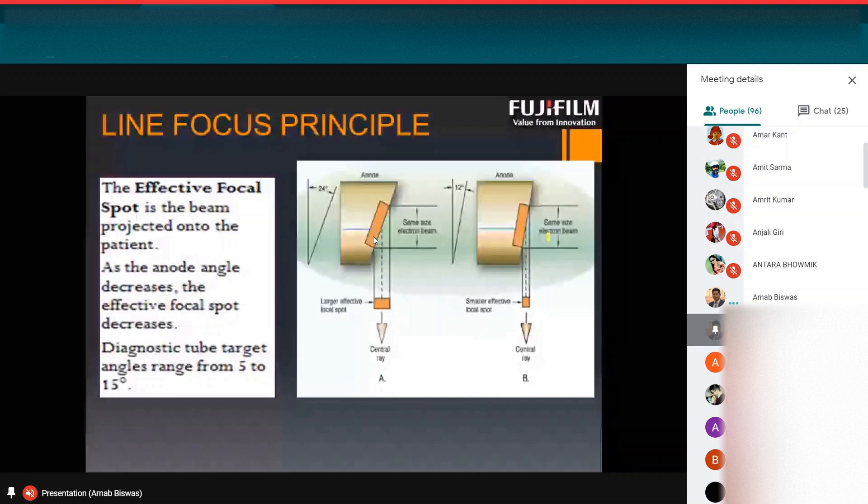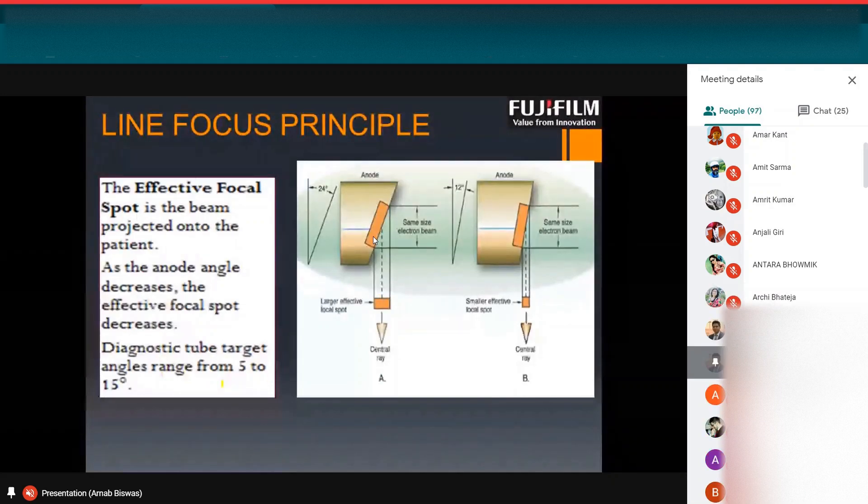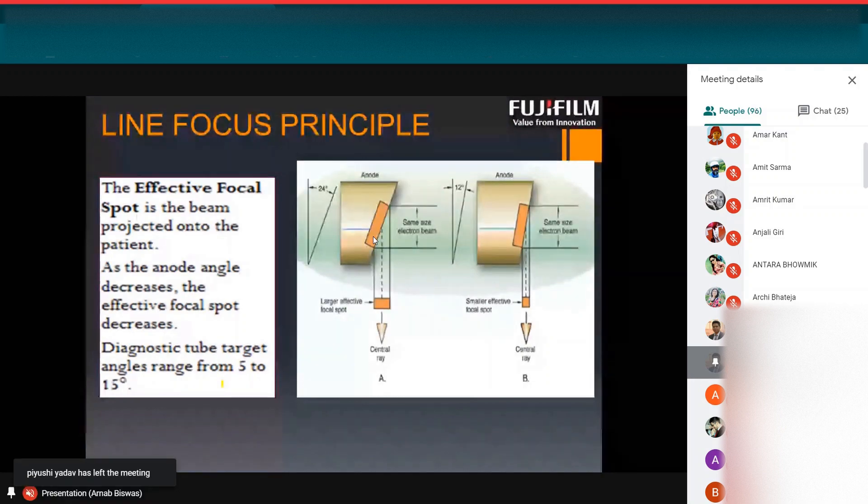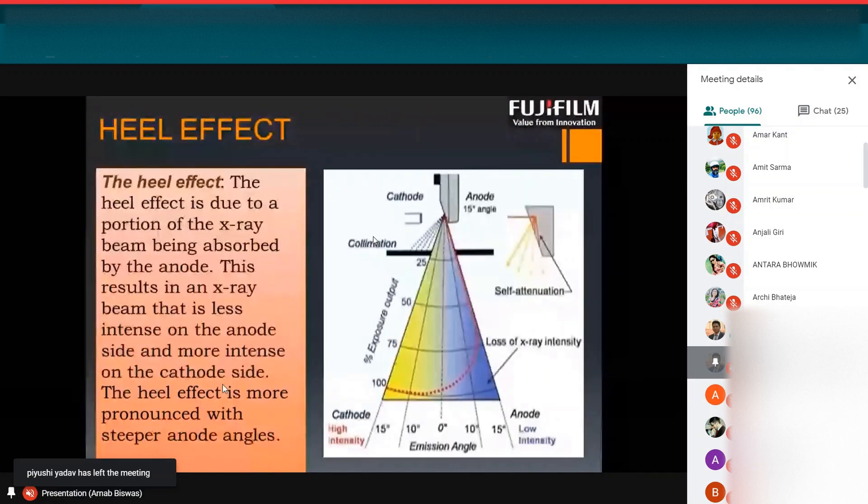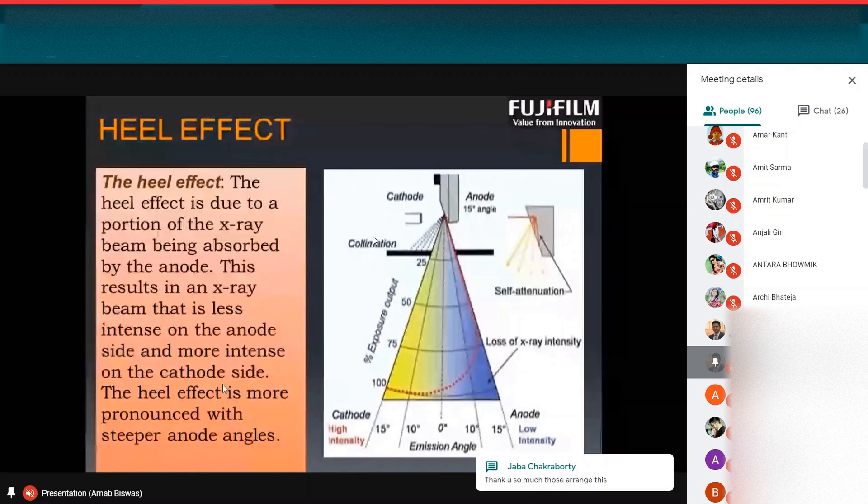Because the anode angle is higher, the focal spot is higher. This is directly proportional, that if you increase the anode angle, the effective focus spot will increase. Diagnostic tube target angles range from 5 to 15 degree. Due to anode angle, we use 15 degree anode angle. And when the electrons collide to the anode, it travels through an angle. So here, heel effect is causing this.